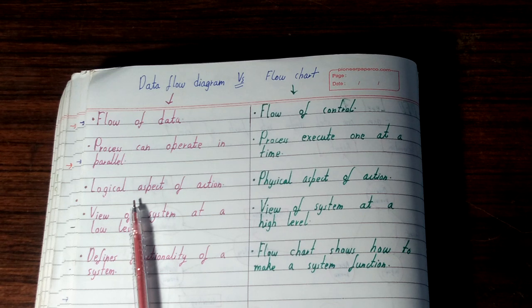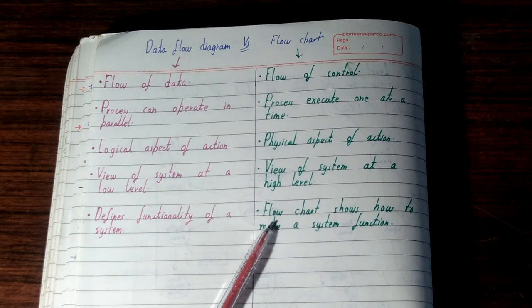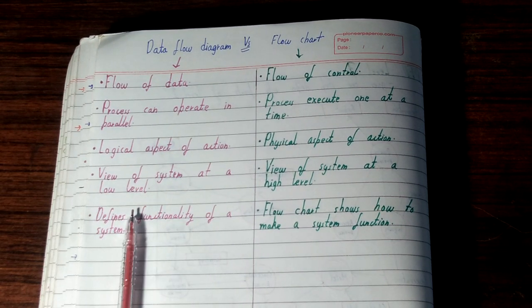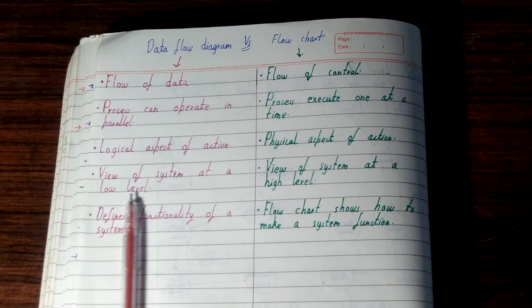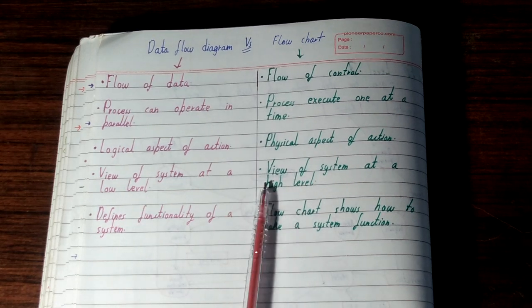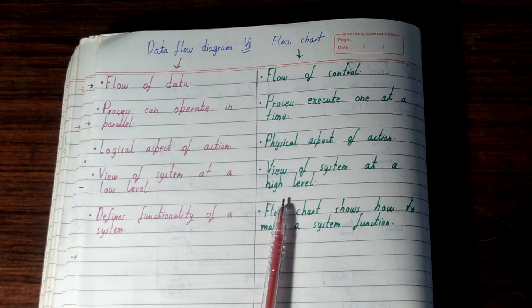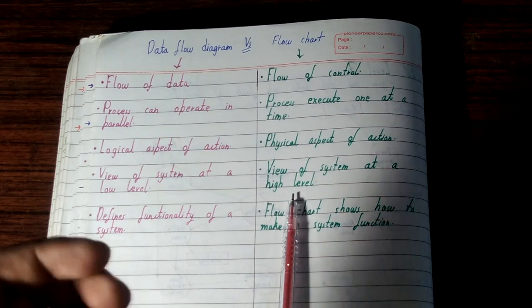It is a view of system at a low level. When you view a system from a low level or just want to understand the system, you use data flow diagram for understanding perspective. But when you want to really understand how a system is working, when you're someone working with that system and you know this is the system and want to know how it works, then you go to flowchart - it's a view of system at a high level.